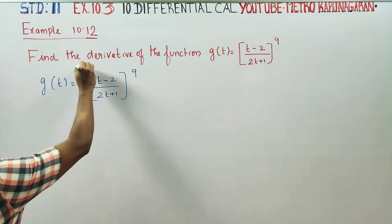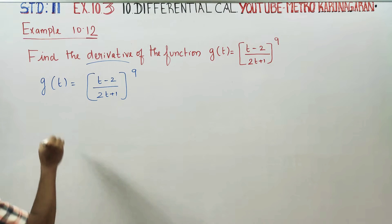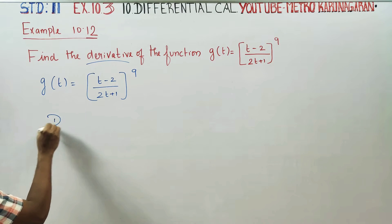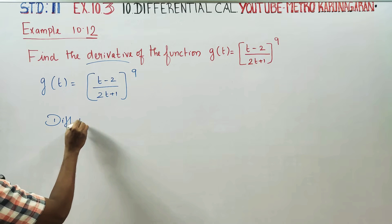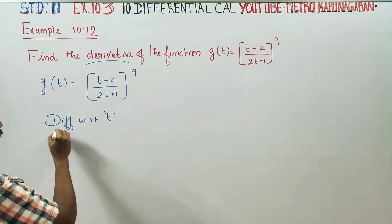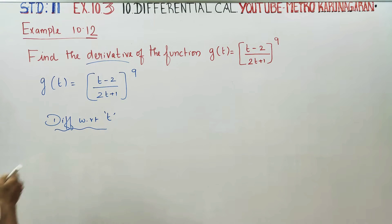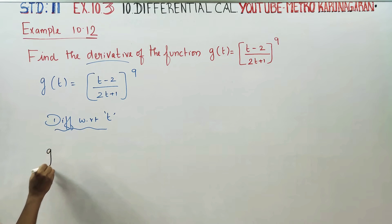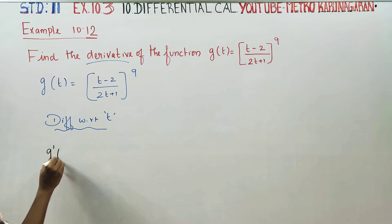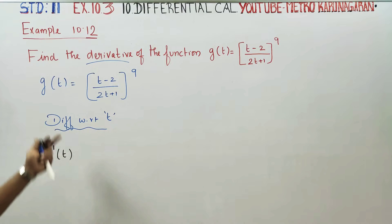I am going to differentiate with respect to t. This is VIP — remember this is VIP. I will say you have 1 dash, meaning the differentiation is over.